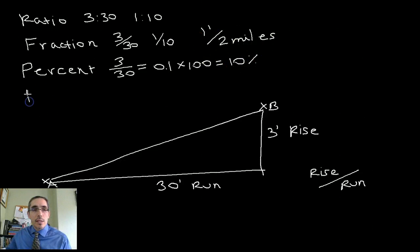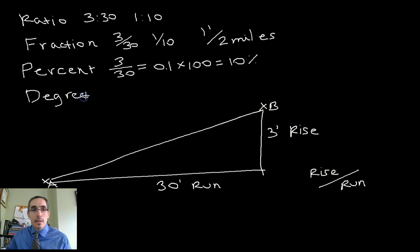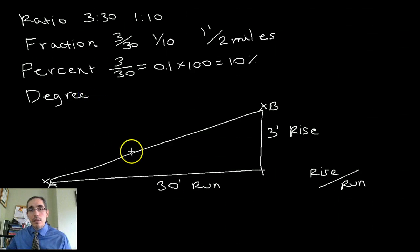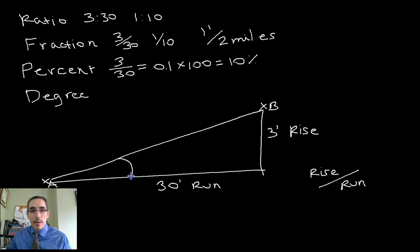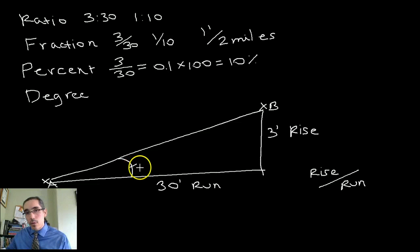Lastly, there is an expression of slope as a degree, as in degrees of slope. In this case, when we talk about the slope degrees or the degrees of slope, what we're really talking about is this angle here. We want to know what the angle is. That's what the degrees describe.